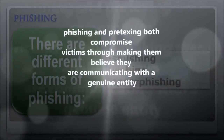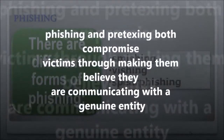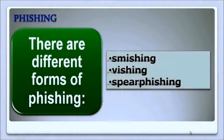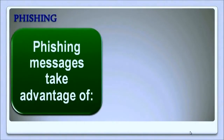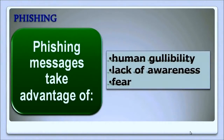Phishing is quite similar to pretexting in that both deceive victims into thinking they are communicating with a genuine, authorized entity. Phishing messages take advantage of human weaknesses like gullibility and lack of awareness. Human beings can be easily deceived into thinking a message is genuine, and hence they fall for phishing messages.